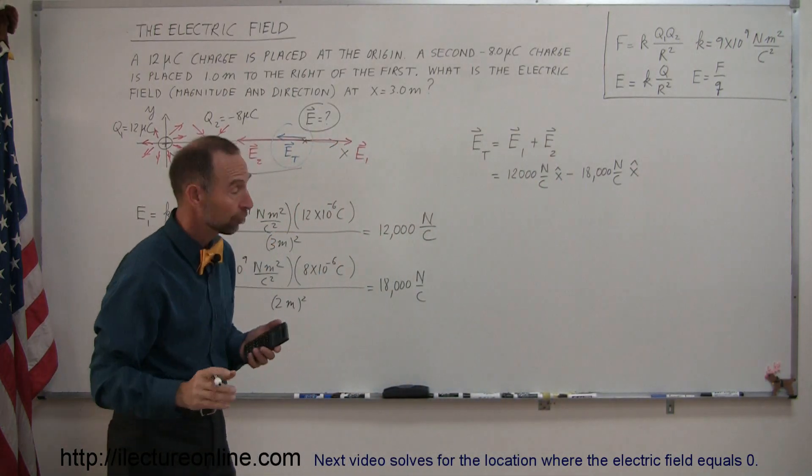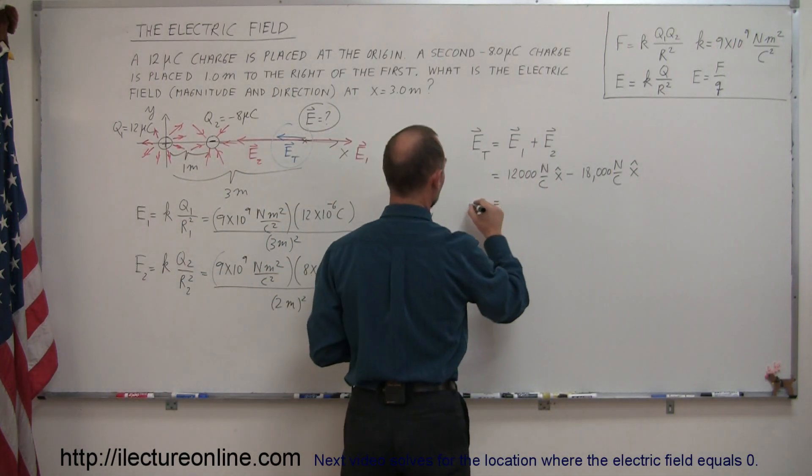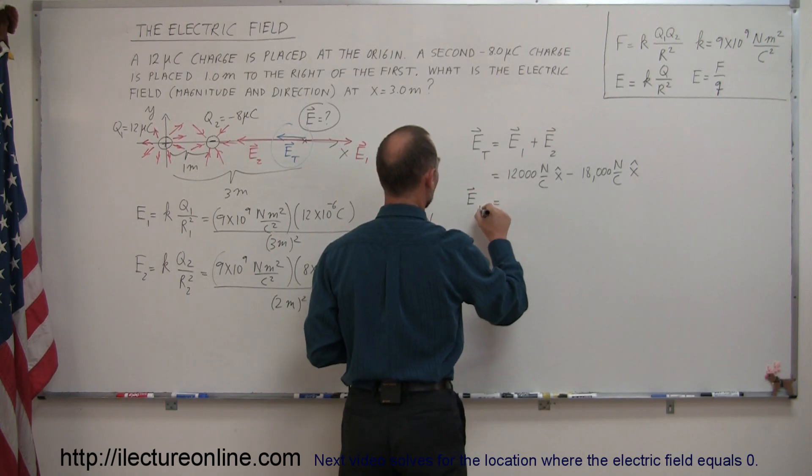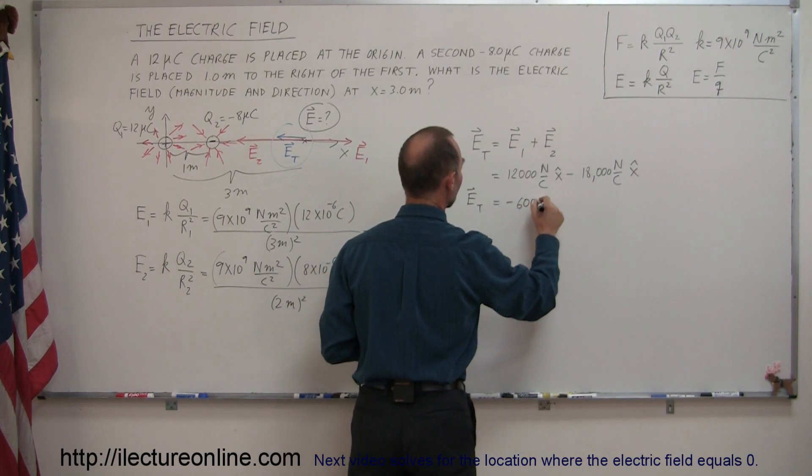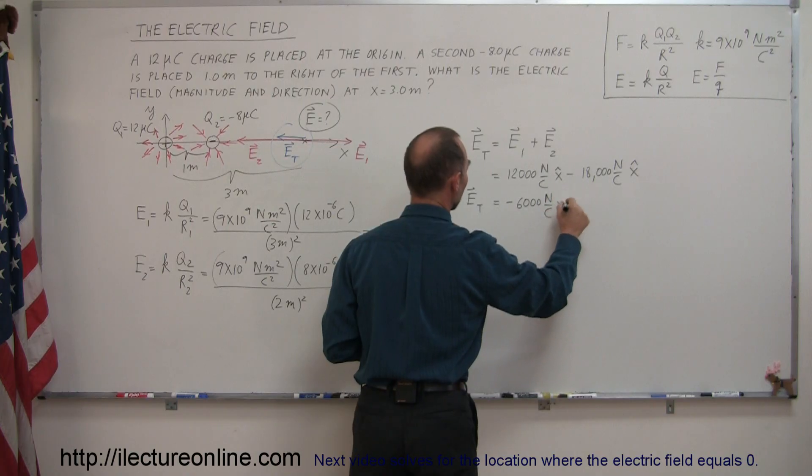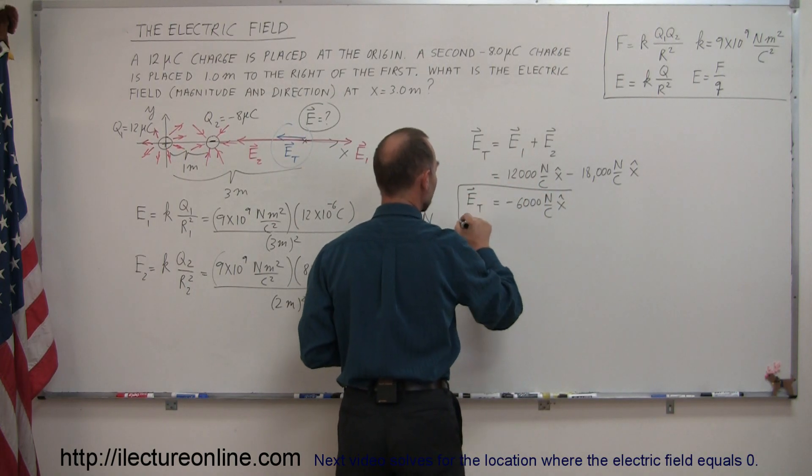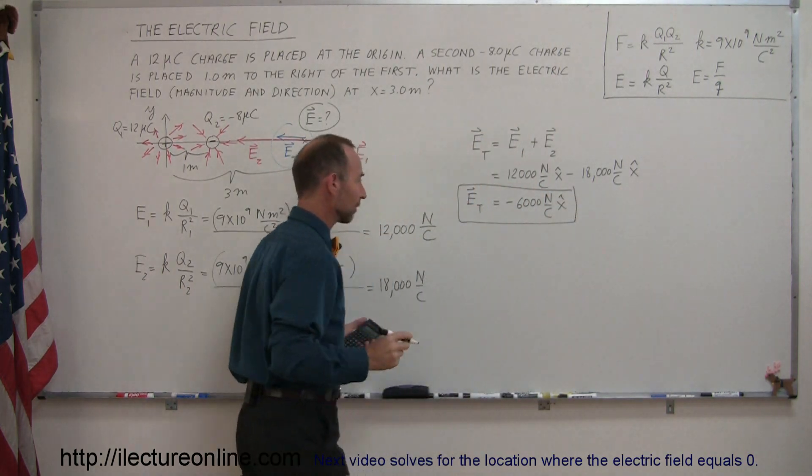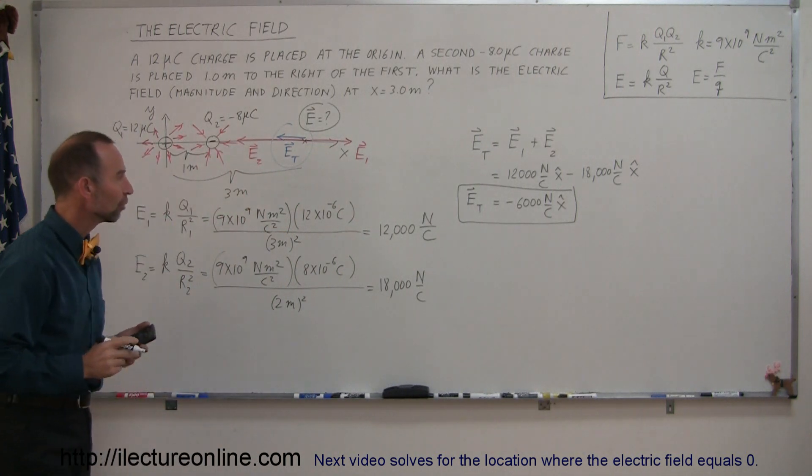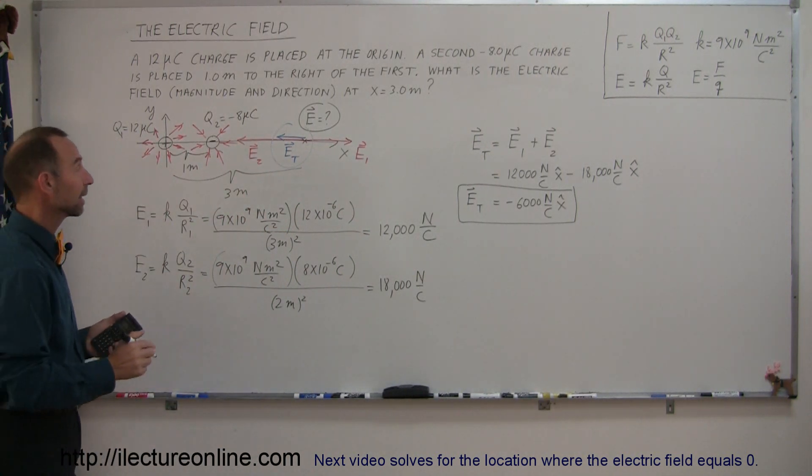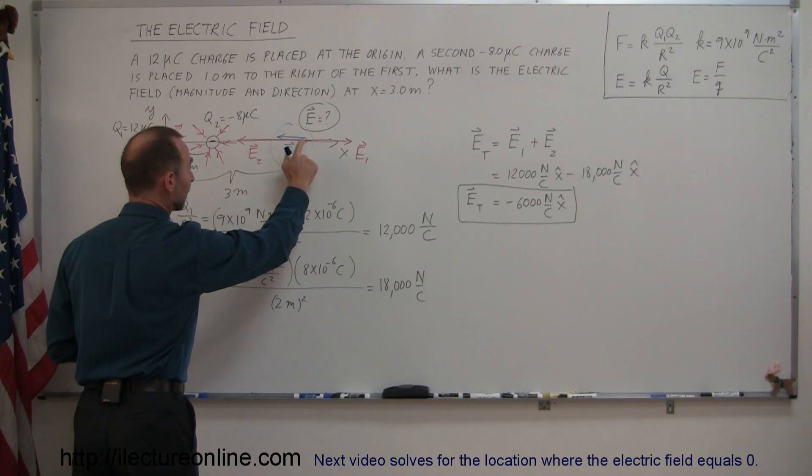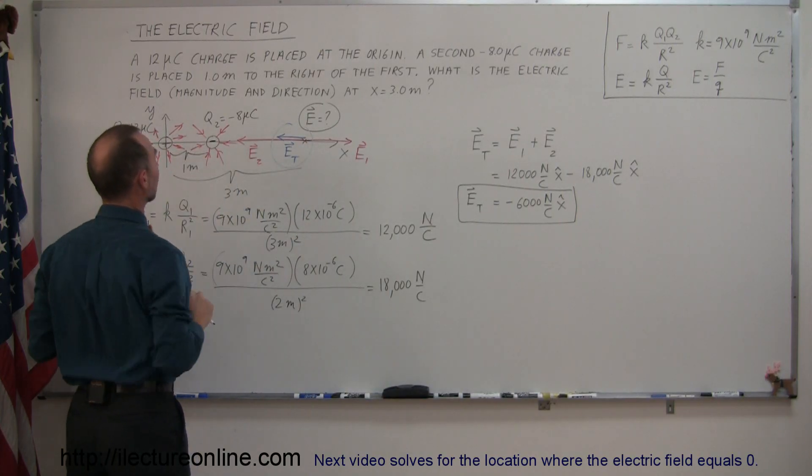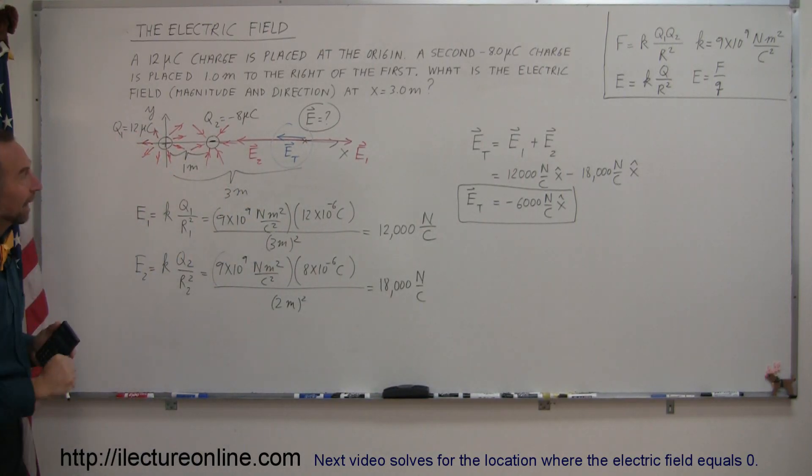Now we add those two together. We get the electric field is therefore equal to minus 6,000 newtons per coulomb, and of course that's in the x direction or the negative x direction. That would be the result. Therefore, that would be the electric field strength and direction at this location due to the presence of those two charges, and that's how you do that.